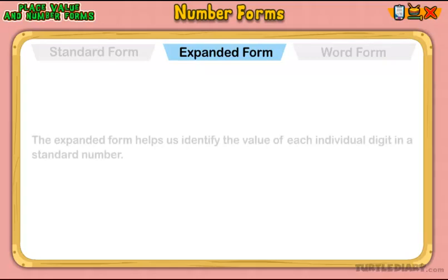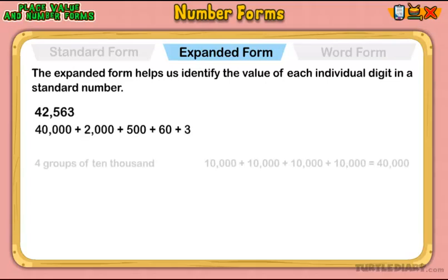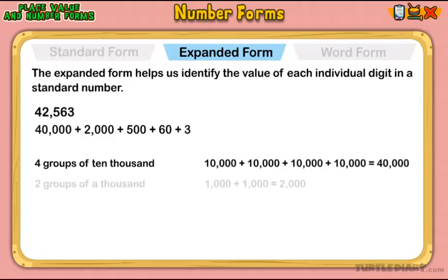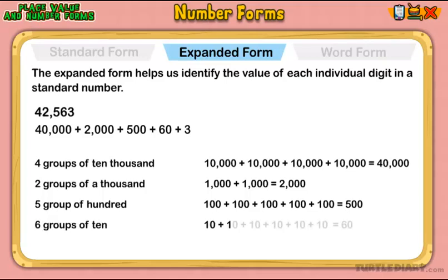Expanded form helps us identify the value of each individual digit in a standard number. In this example, 42,563: the four represents four groups of ten thousand, two represents two groups of a thousand, five represents five groups of a hundred, six is six groups of ten, and three represents three groups of one.